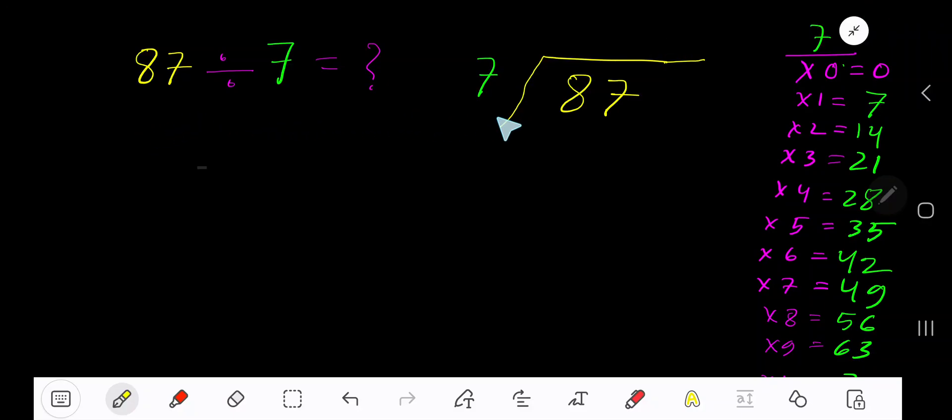87 divided by 7. Here 7 is the divisor, so we need the multiplication table of 7. 7 times 0 is 0, 7 times 1 is 7, 7 times 2 is 14, 7 times 3 is 21, 7 times 4 is 28.